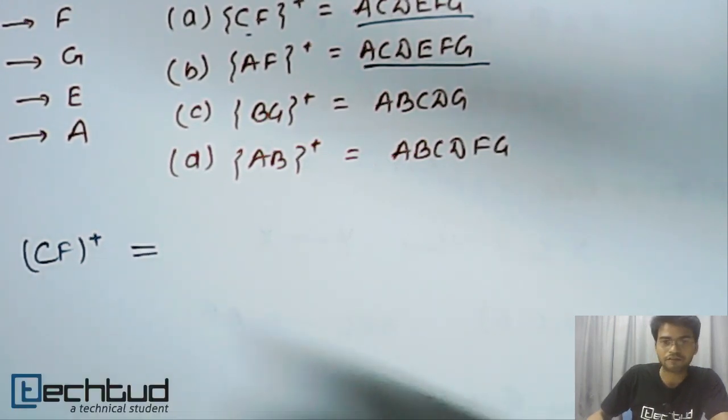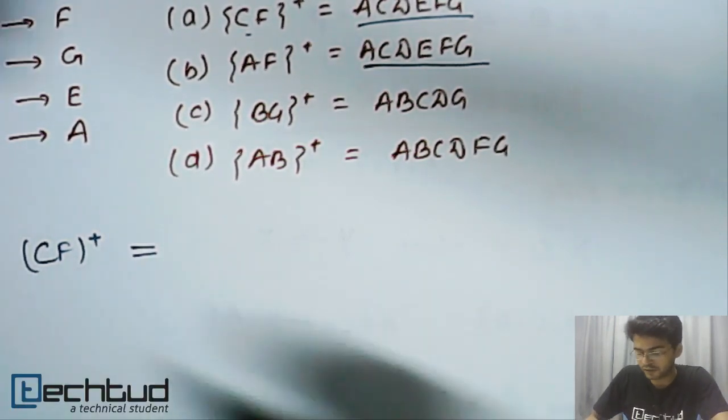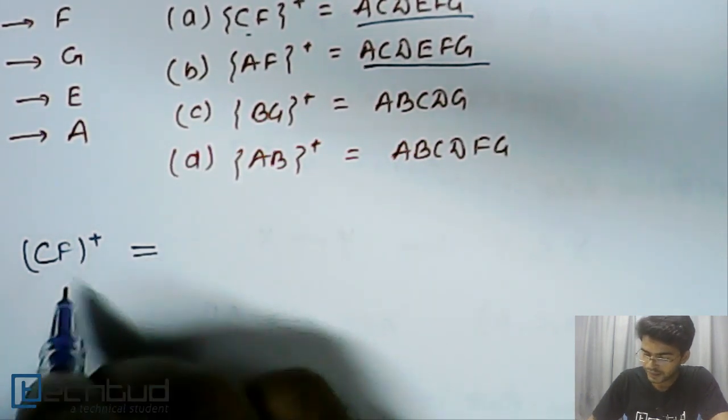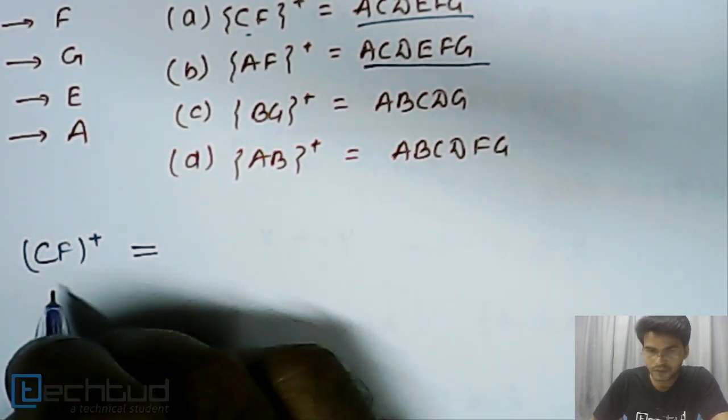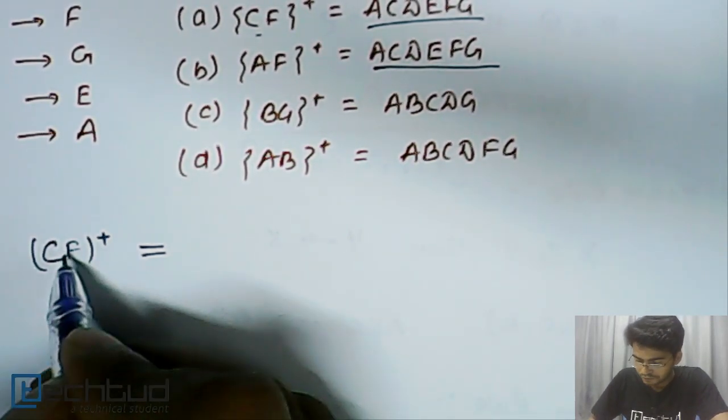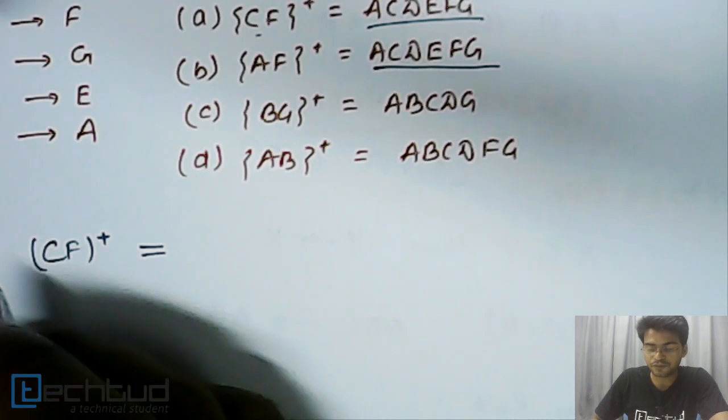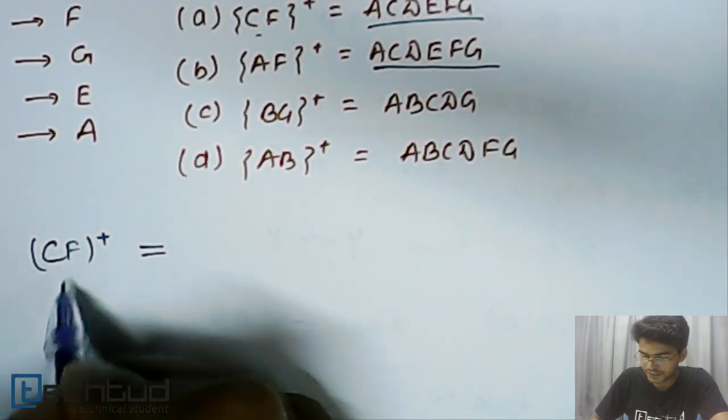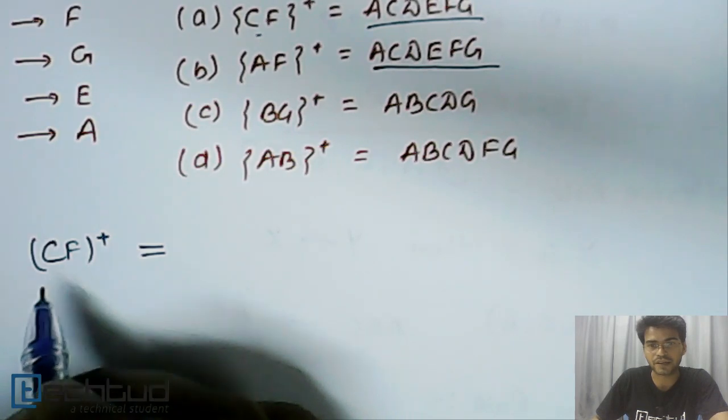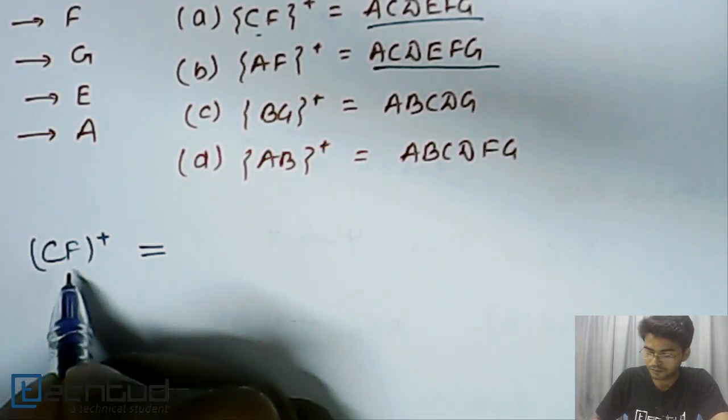Let's start with CF plus, closure of CF. As we have learned how to find out closure of an attribute that is X closure, we will use our concept. To revise what do we do? Basically, we try to find out what are the attributes which can be determined with the help of this attribute C and F. That we will see here.